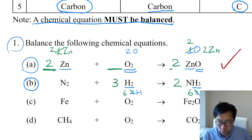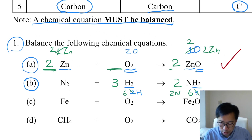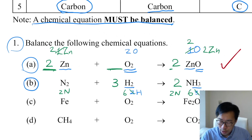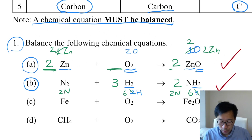Then you check the number of N atoms. On the right-hand side you got 2 N atoms, and on the left-hand side you also got 2 N atoms. So the number of N atoms is also balanced. This is already a balanced chemical equation, so question number 1B is finished.